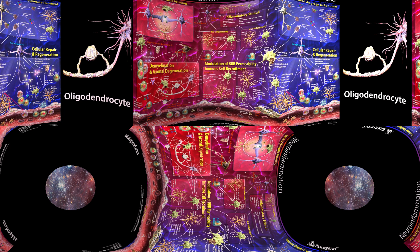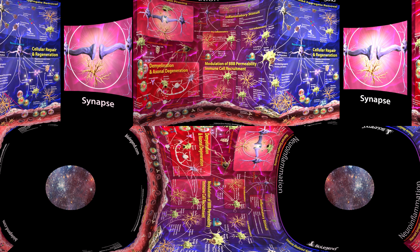The myelin sheath is produced by oligodendrocytes and provides support and insulation to axons in the CNS. Oligodendrocytes also provide trophic support by producing factors such as glial cell line-derived neurotrophic factor (GDNF), brain-derived neurotrophic factor (BDNF), and insulin-like growth factor 1 (IGF-1). A combination of cytokines from microglia, astrocytes, and infiltrating peripheral immune cells, autoantibodies against components of myelinated neurons, and activated complement proteins lead to oligodendrocyte death, loss of myelin, axonal breakdown and degeneration, and subsequent neuronal cell death.